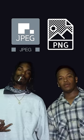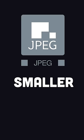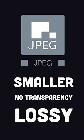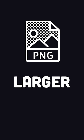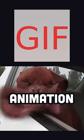JPEG and PNG are the OGs from the 90s. JPEG is smaller because it doesn't support transparency and uses lossy compression, while PNG has transparency with lossless compression. GIF — not GIF — is similar, but can also combine frames to make animations.